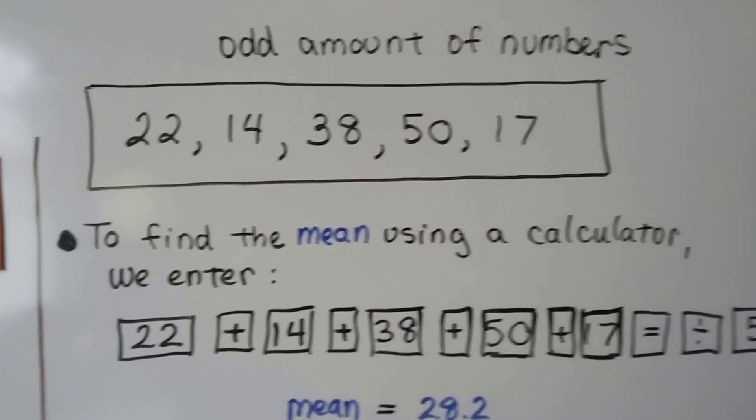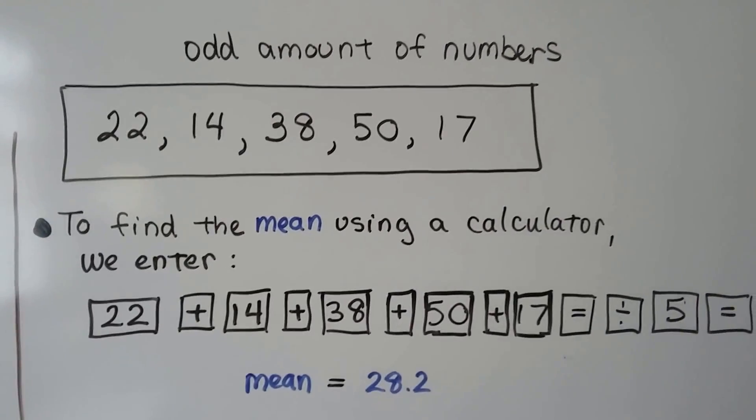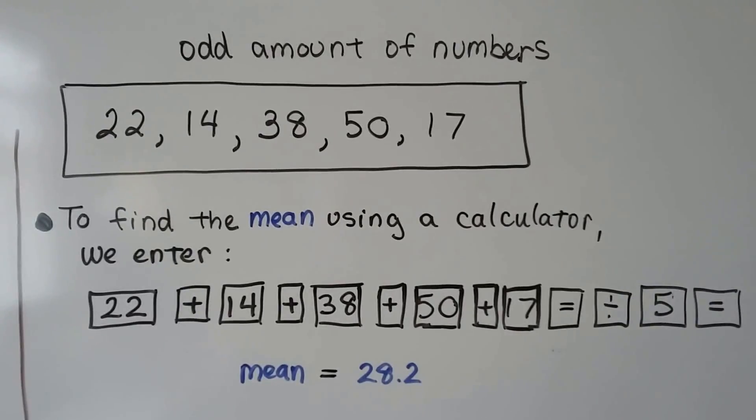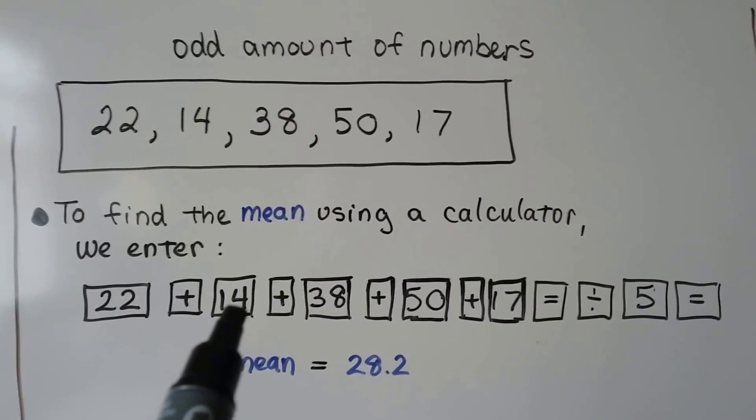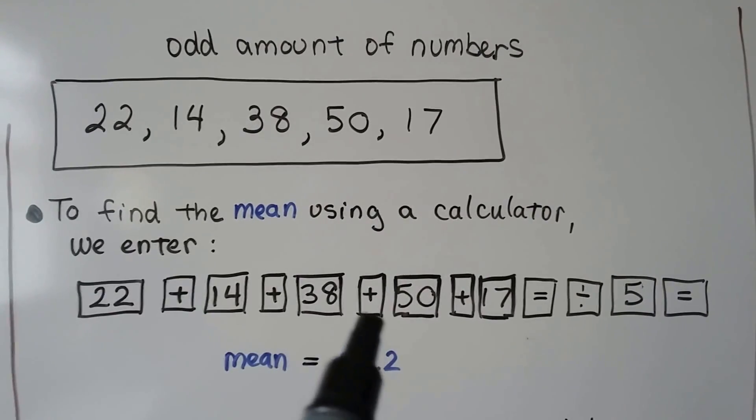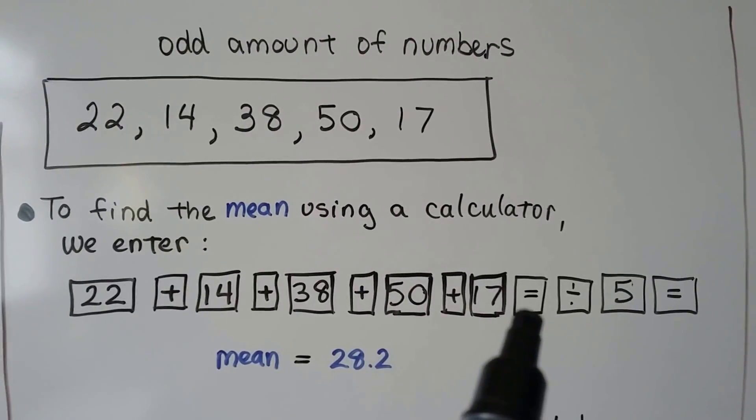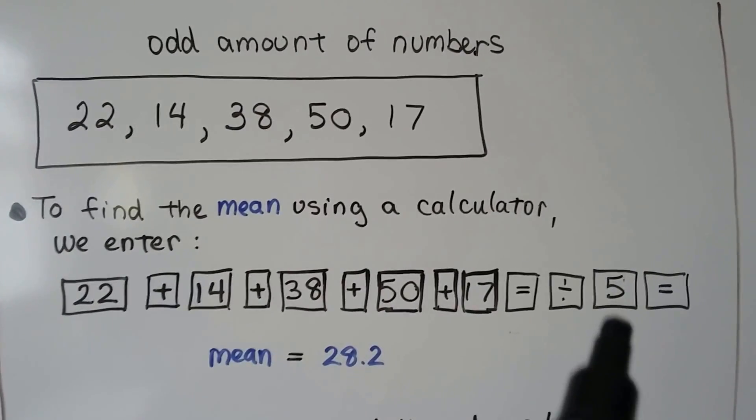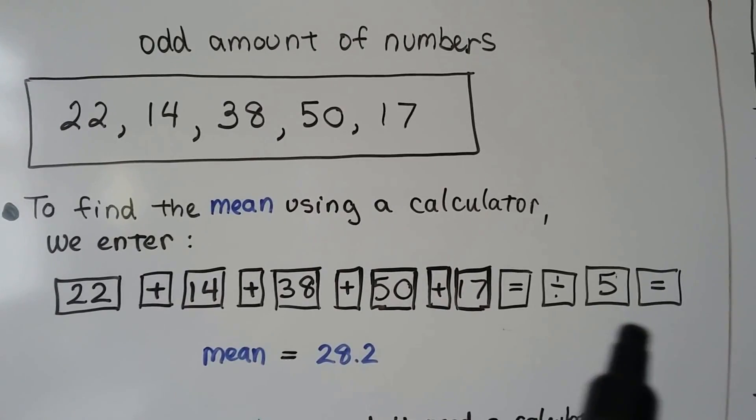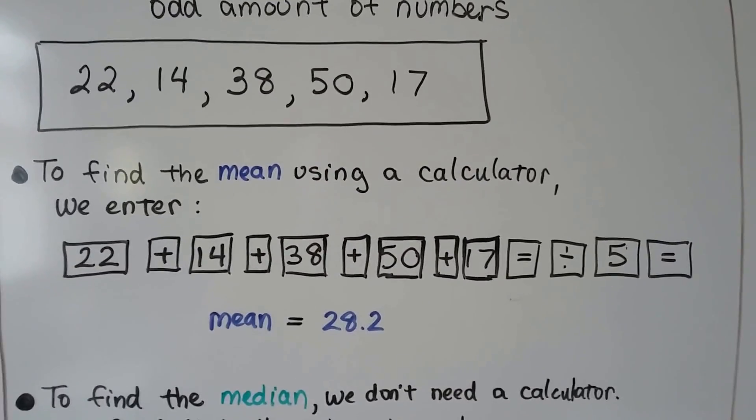I'll show you. Here we have an odd amount of numbers. We have five numbers. To find the mean using a calculator, we enter 22 plus 14 plus 38 plus 50 plus 17 equals, division sign 5 because there's five numbers, and then equals. We'll get a 28.2.